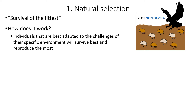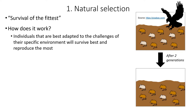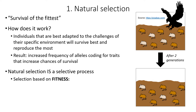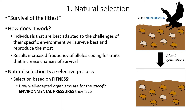If we come back and look at this population in a couple of generations, we would see fewer light-colored mice and more dark-colored mice. So the result of natural selection is an increased frequency of alleles coding for traits that increase chances of survival. Natural selection is a selective process since survival and reproduction are dependent on phenotype, and here selection is based on fitness. In biology, fitness refers to how well adapted organisms are for the specific environmental pressures they face — things like competition for resources, predators, climate, disease, etc.